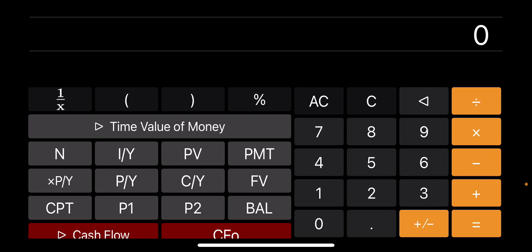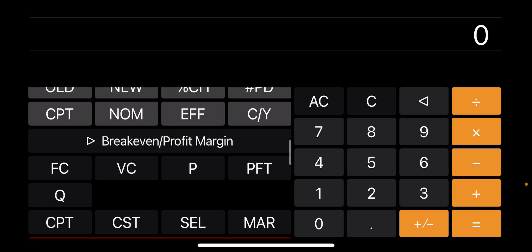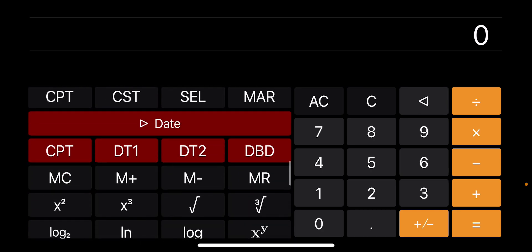To calculate mortgages we use the Time Value of Money. As you can see in landscape mode in the left section of the buttons, if you notice the left buttons scroll up and down so you can see more financial functions.